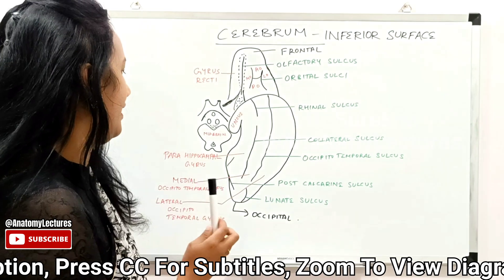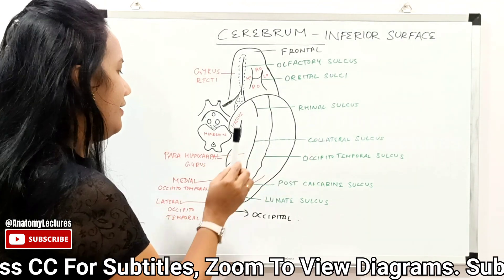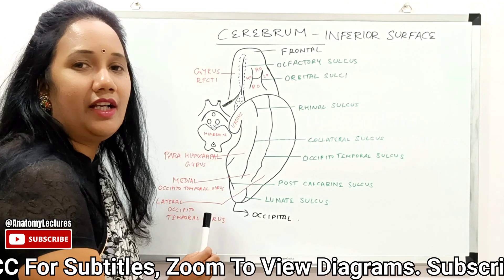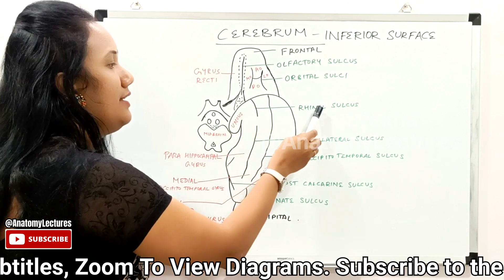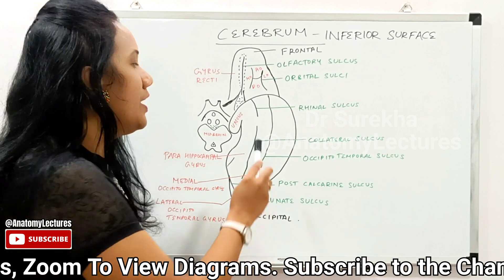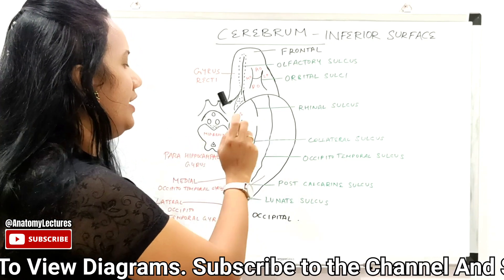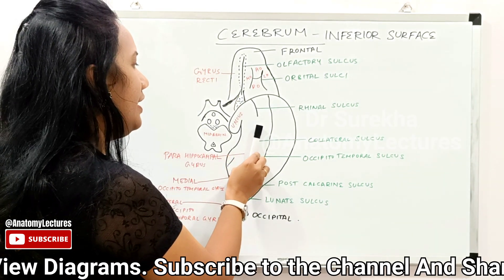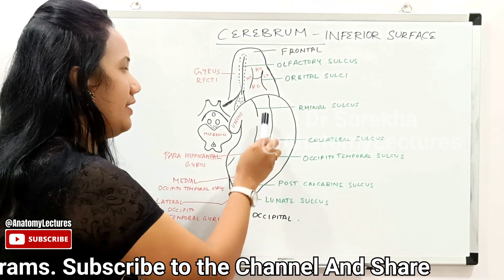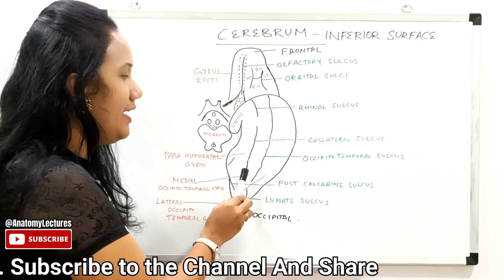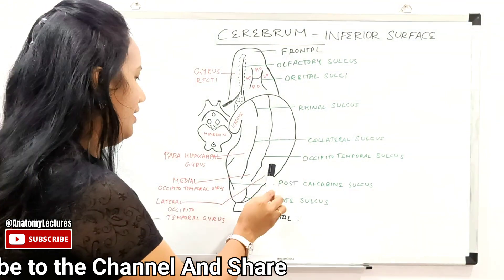The gyri in relation to these sulci: the part of the inferior surface medial to the collateral sulcus is referred to as the para-hippocampal gyrus. The part medial to the rhinal sulcus, in relation to the uncus, is referred to as the primary olfactory area — area number 28. In between the collateral sulcus and the occipitotemporal sulcus, you have the medial occipitotemporal gyrus. Lateral to the occipitotemporal sulcus, you have the lateral occipitotemporal gyrus.